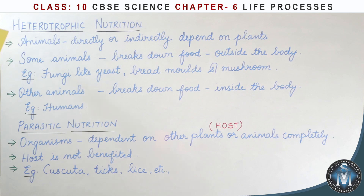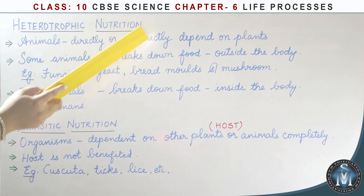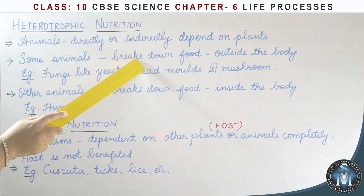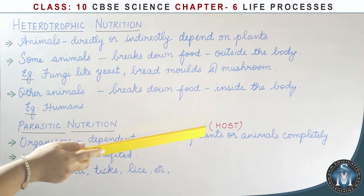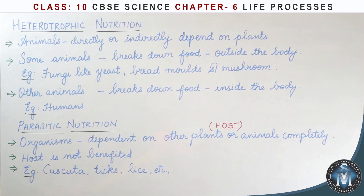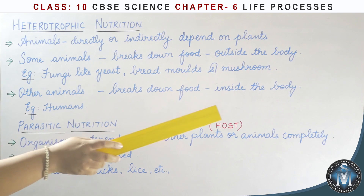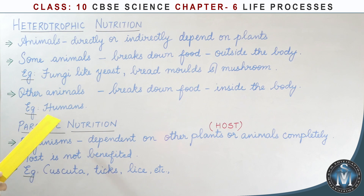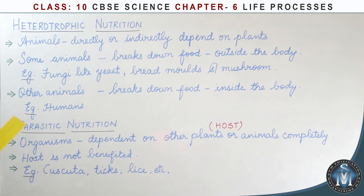Next, we will talk about heterotrophic nutrition — the nutrition of animals. Directly or indirectly, food depends on plants. Animals break down food for the body. For example, fungi use saprophytic nutrition. Another type is parasitic nutrition.